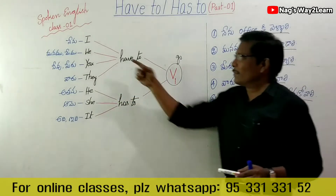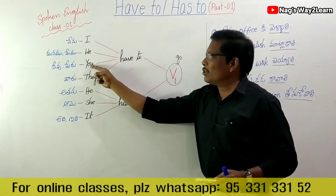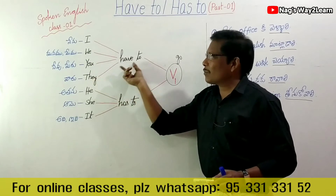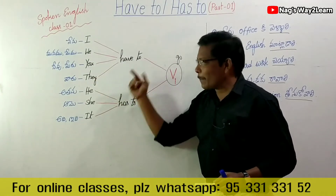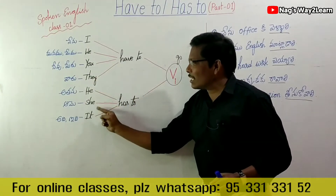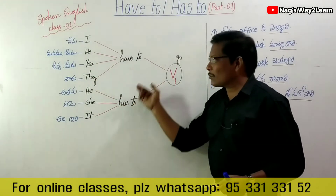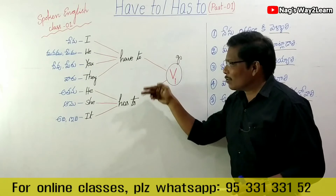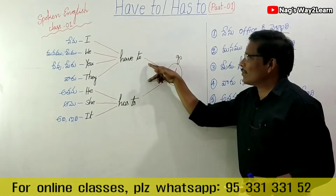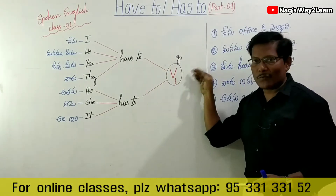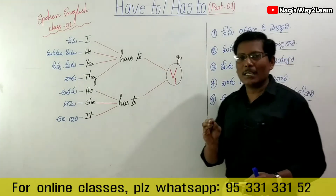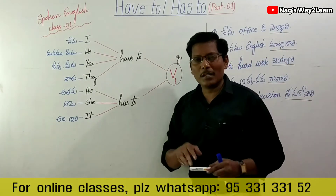In this case: I, we, you, they — use 'have to'. He, she, it — use 'has to'. After 'have to' and 'has to', we use the verb's first form.